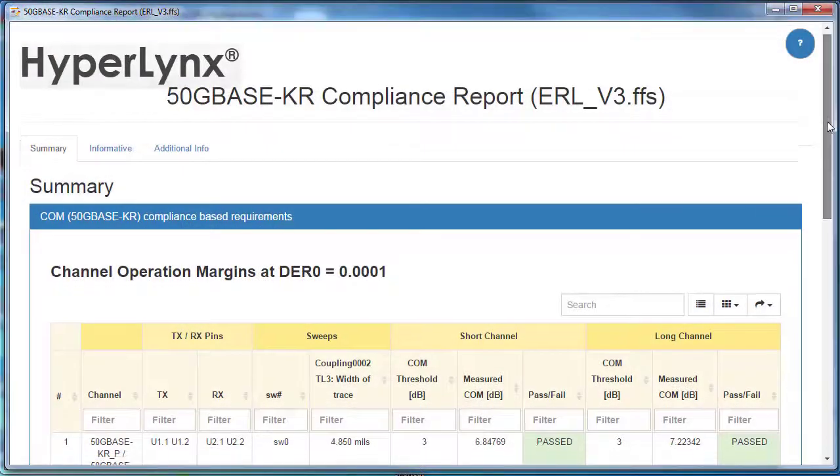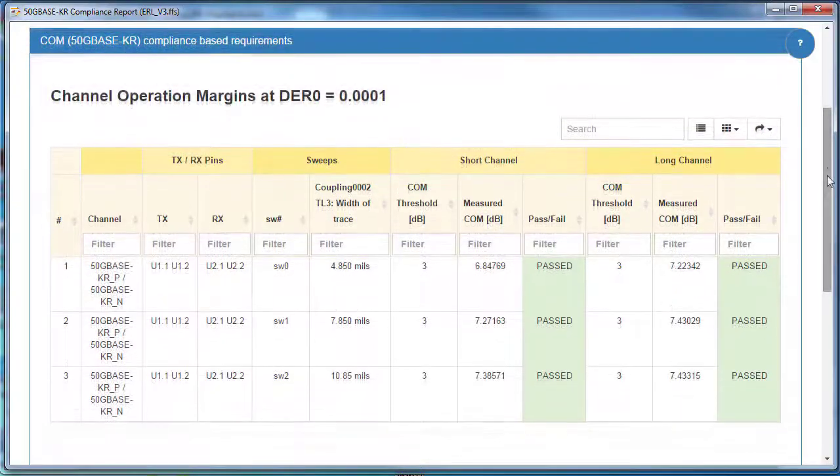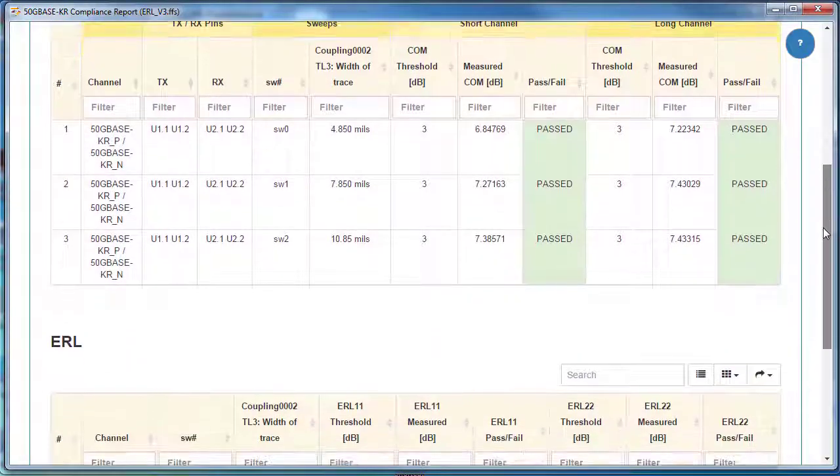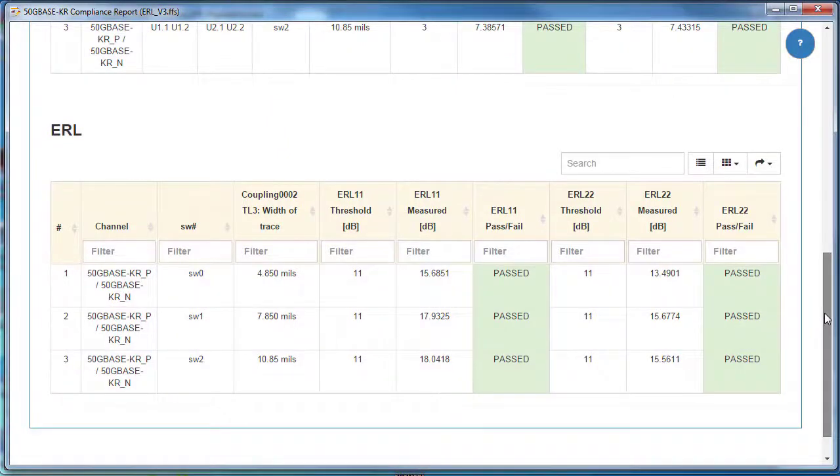Here are the compliance analysis results for our simple channel. Here we can see the COM analysis is passing as before. And now when we calculate the ERL value, we see that that is also passing for this channel.